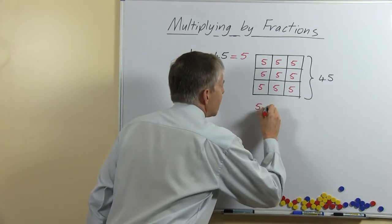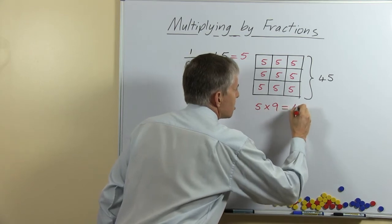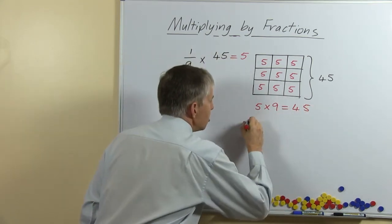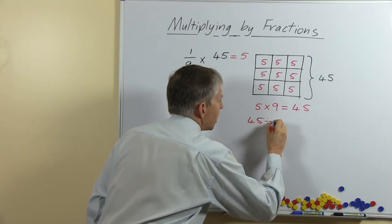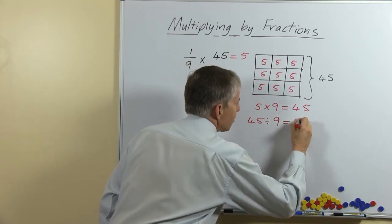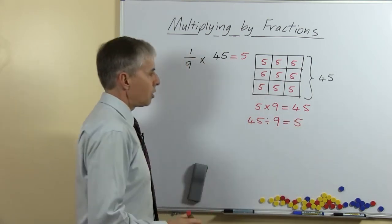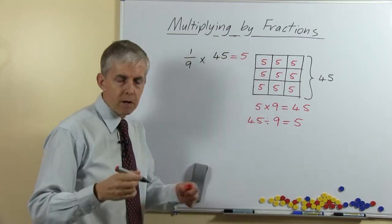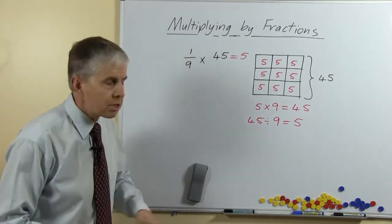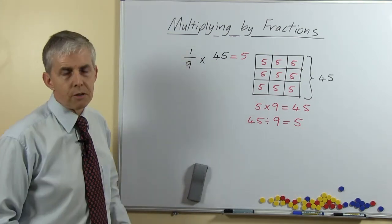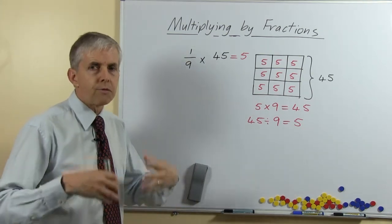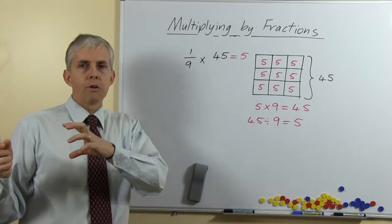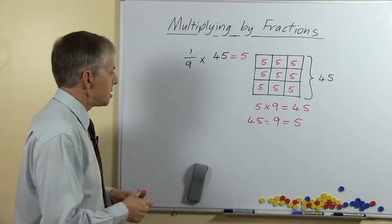We can relate this back to the number facts and times tables the students have done. We can look at the related number fact: 45 divided by nine is 5, so one ninth of 45 is 5. These are one-step questions — the symbols are different and we use fraction language and fraction pictures — but once we can make that connection between fractions and division, these are not hard.